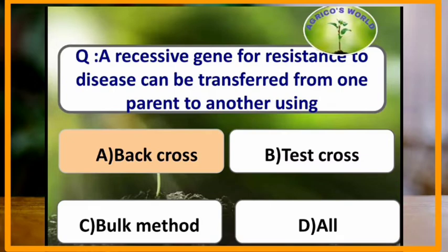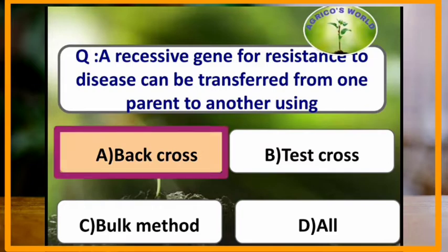A recessive gene of resistance to disease can be transferred from one parent to another using the backcross method.